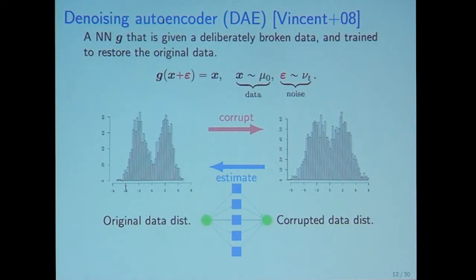The denoising autoencoder is a neural network G that is given deliberately broken input data and tries to restore the original data. In the equation, G is the neural network, and we input x plus epsilon, where x is data and epsilon is noise, and train the neural network to output the clean input x.